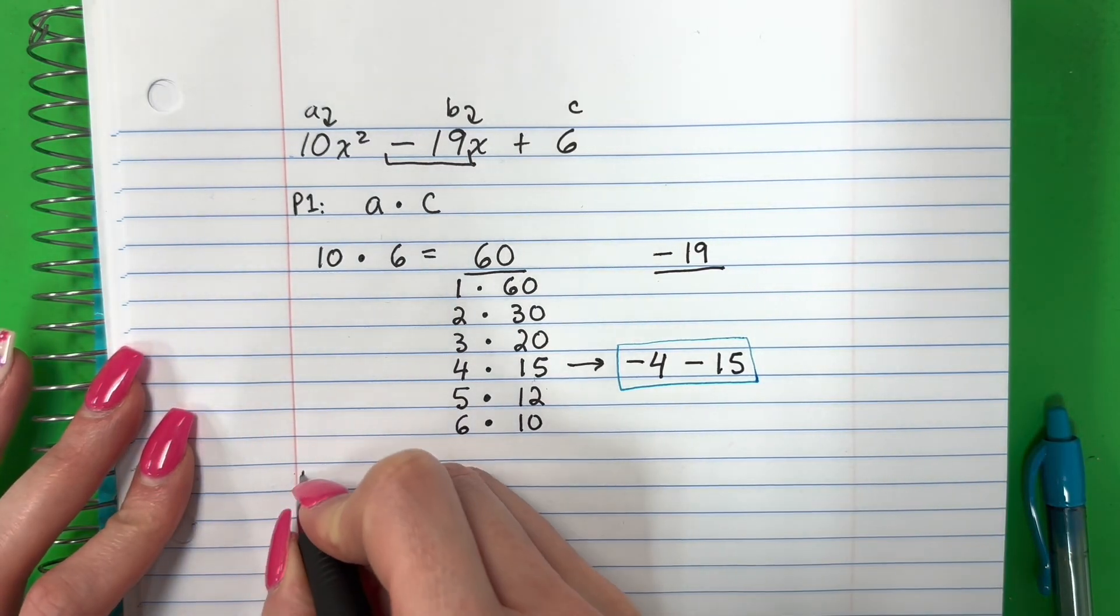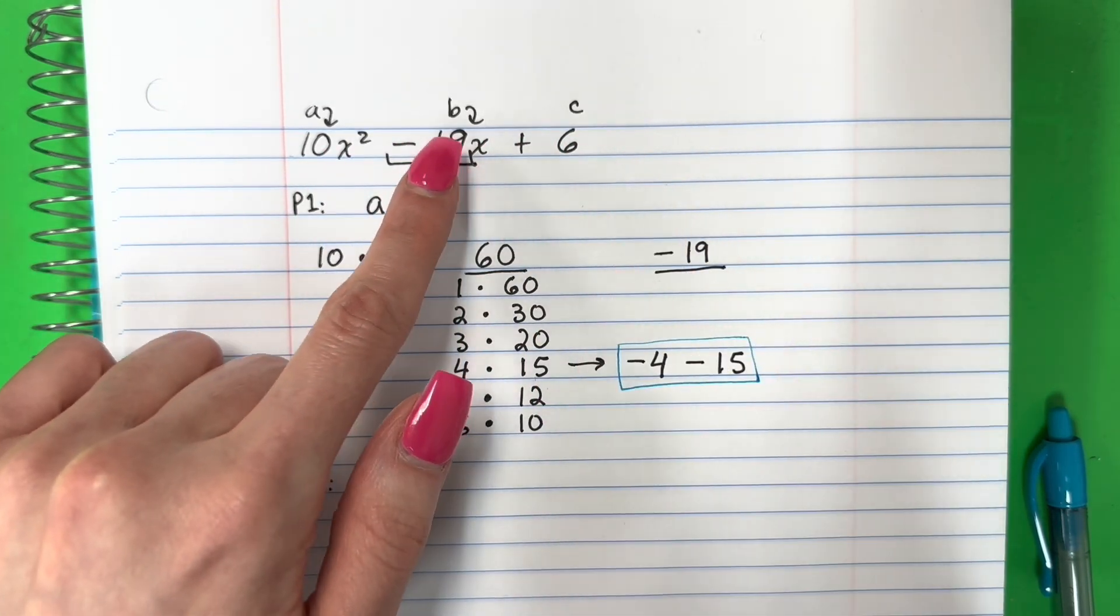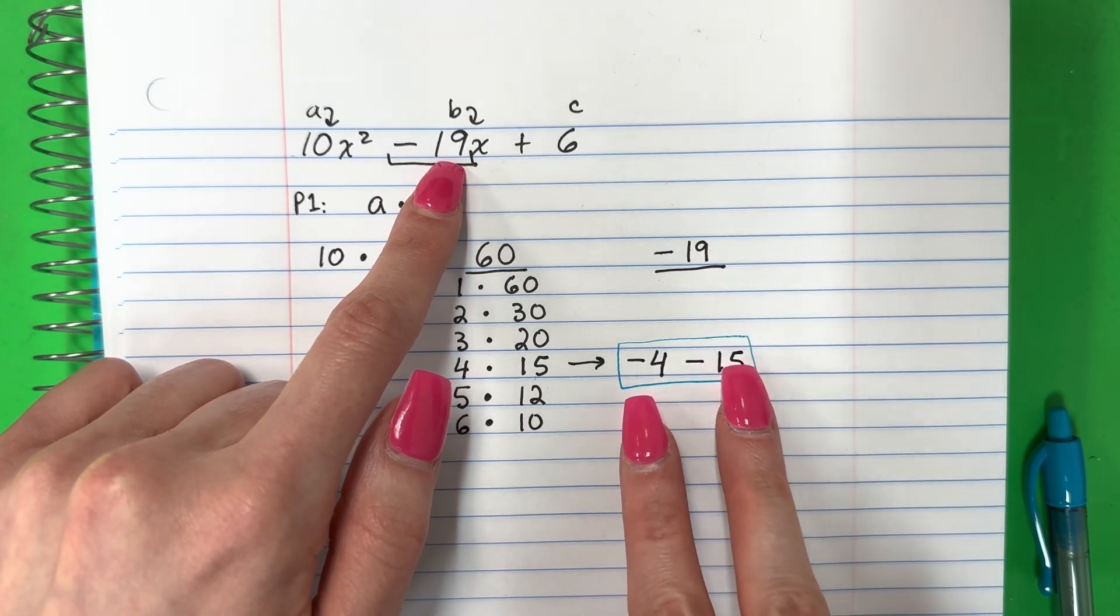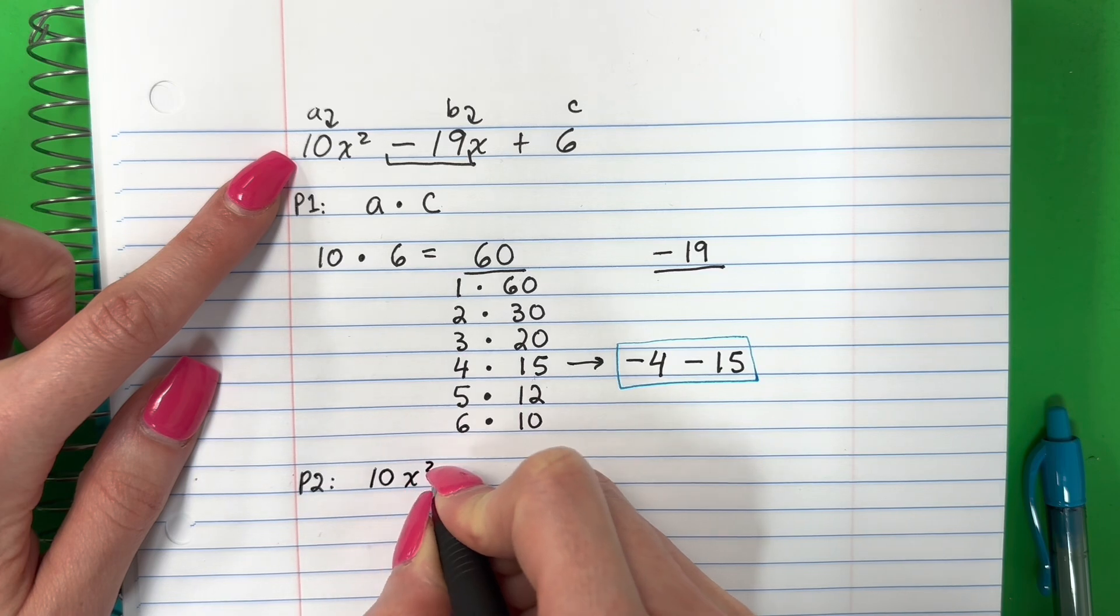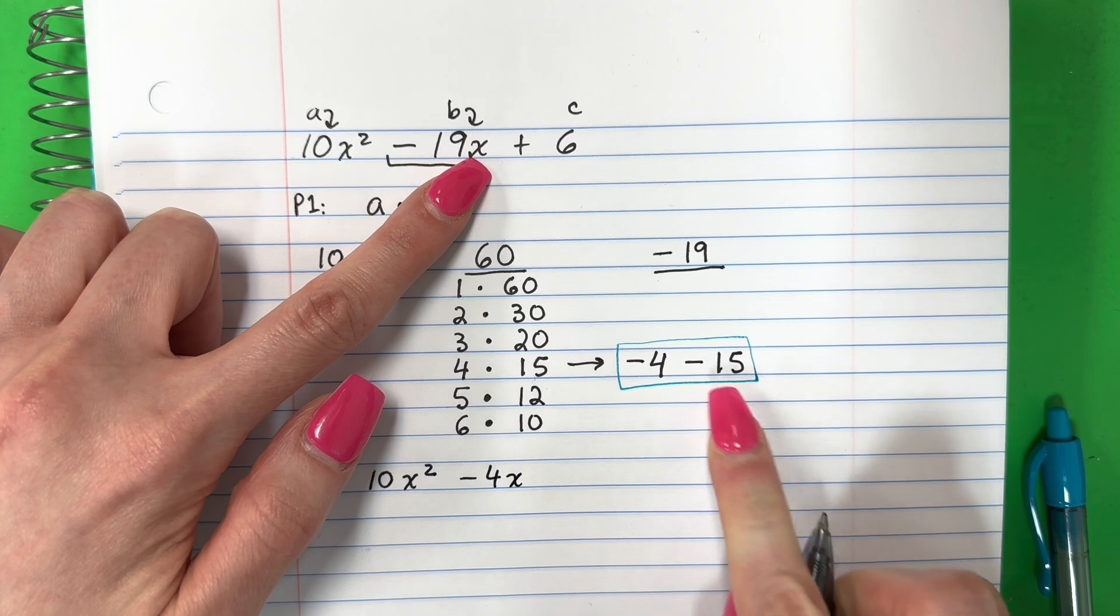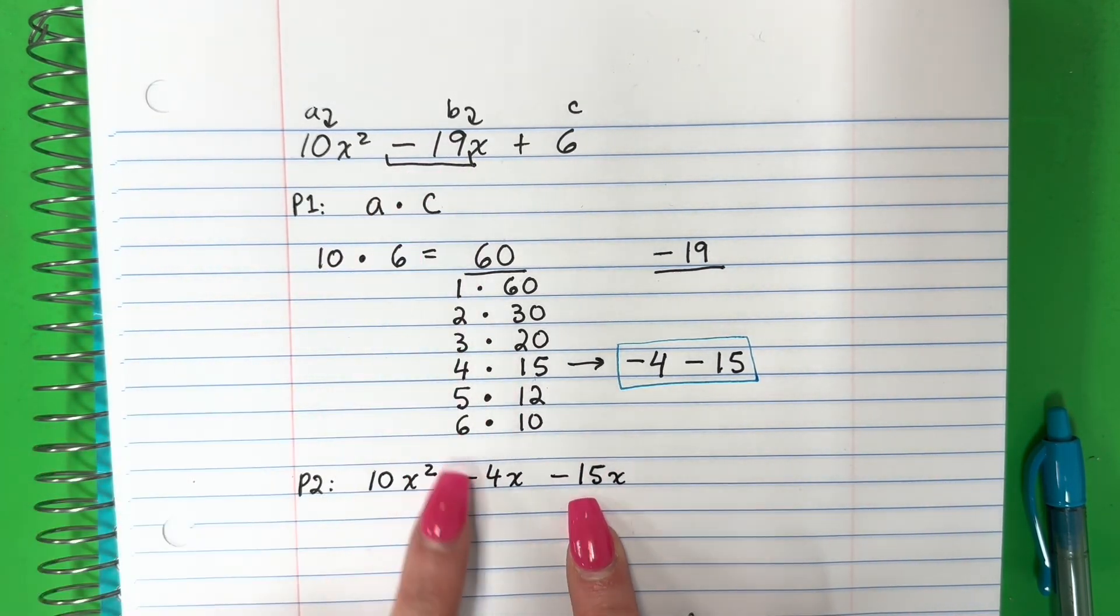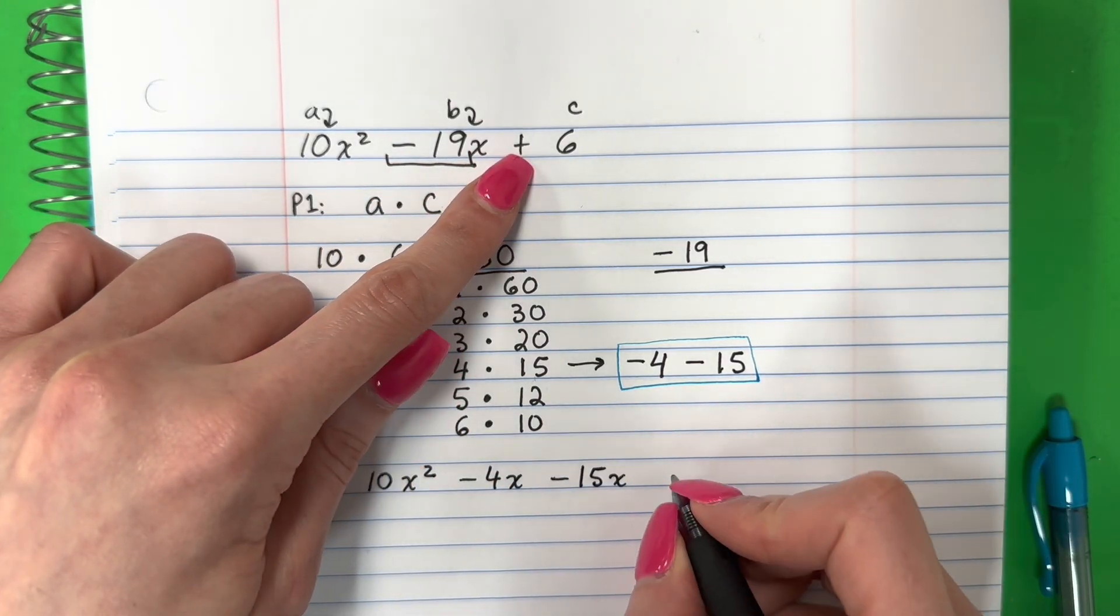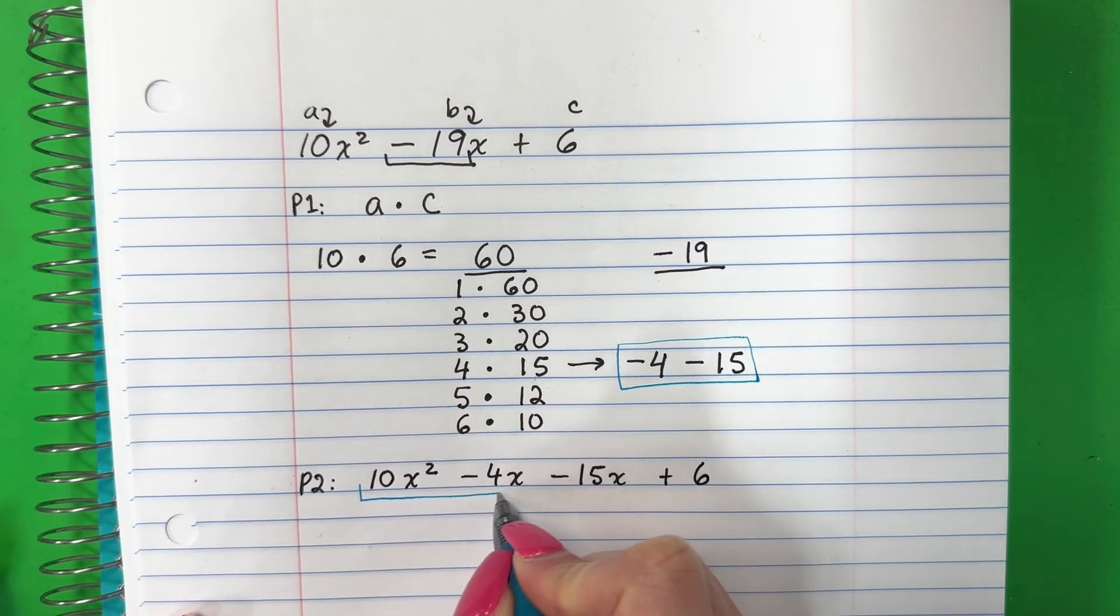Okay, so part two. I'm going to copy all of this, copy todo eso, but not the B, pero no la B. Instead of the B, en lugar del B, I'm going to put these two numbers. Voy a poner estos dos números. So I will put ten x squared. I will put negative four with the x con el x and this one y este with the x con el x. Because these are the same as negative nineteen. Estos son lo mismo que negativo diecinueve. Okay, and then copy plus six. Okay, so I'm going to separate these into two parts now.